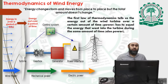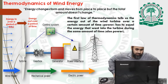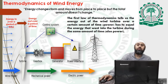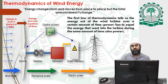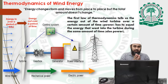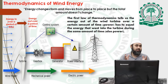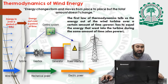The statement on the screen reads: energy changes form and moves from place to place, but the total amount doesn't change. This refers to the first law of thermodynamics, which tells us that energy can neither be created nor destroyed, but changes from one form to another. In the context of wind energy, the total quantity of energy remains constant.